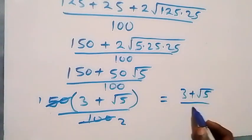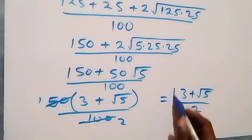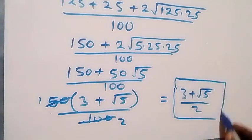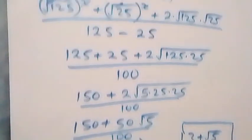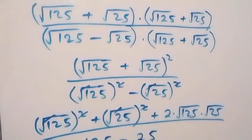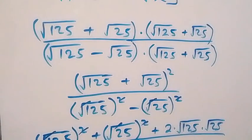This becomes 3 plus root 5 over 2, which is the same as what we obtained in the first method. Thank you for watching — don't forget to subscribe for more videos. See you next class, bye for now.